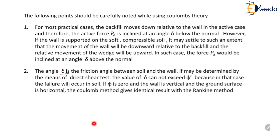Angle delta is the friction angle between soil and the wall, and it can be determined by means of a direct shear test. The value of delta for a concrete wall is taken as two-thirds of phi-dash. The value of delta can never exceed phi-dash, because in that case failure would occur in the soil and the active earth pressure condition would not take place.